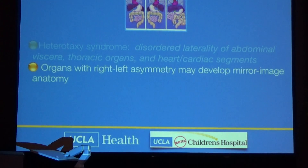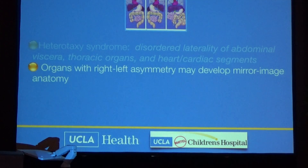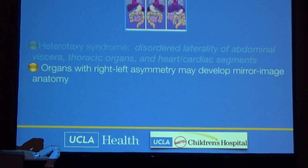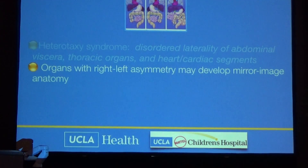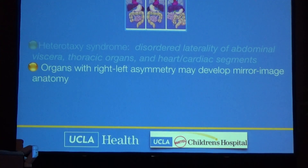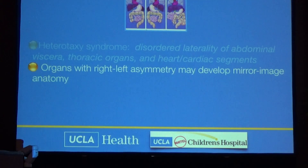We're talking about organs that have right-left asymmetry. These can develop mirror image anatomy — the right could be looking like a left and the left could be looking like a right. Or somewhere in the middle; it doesn't have to be completely one or the other.